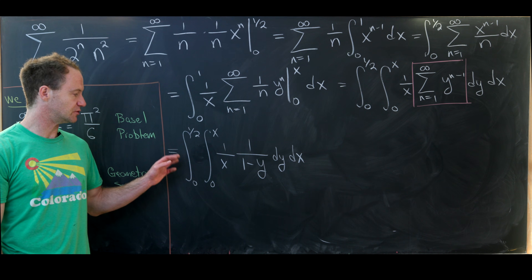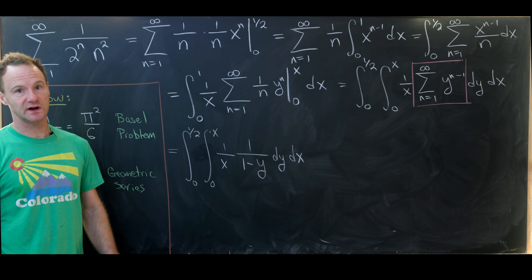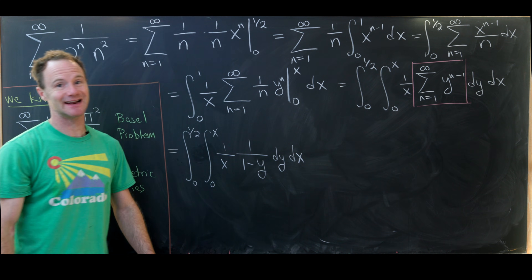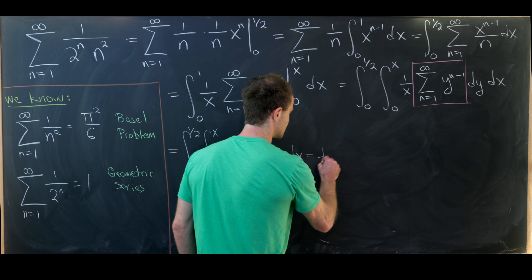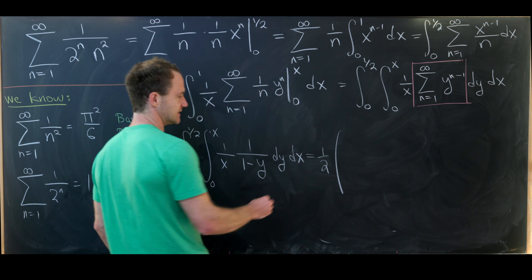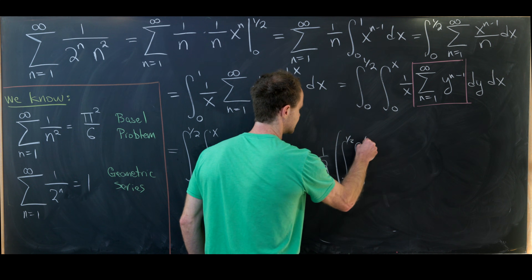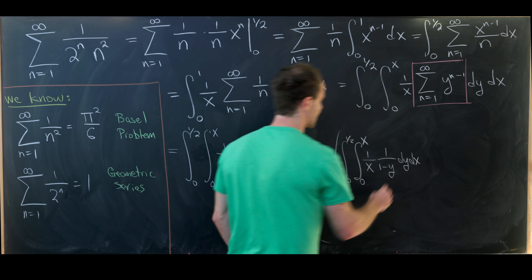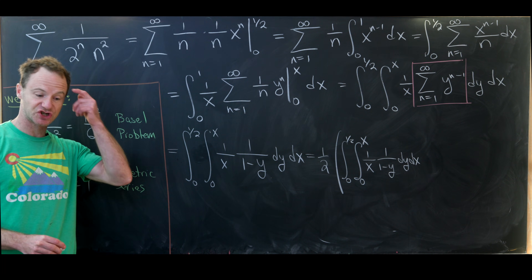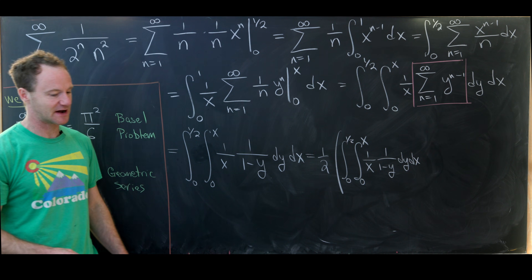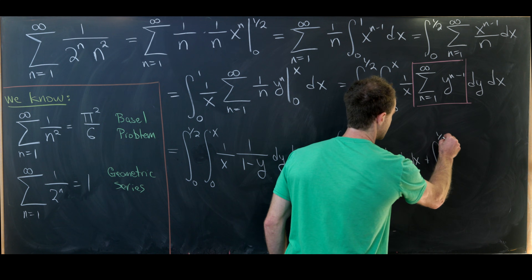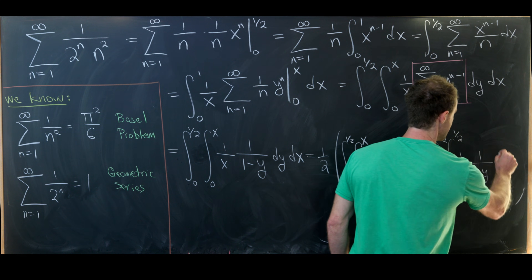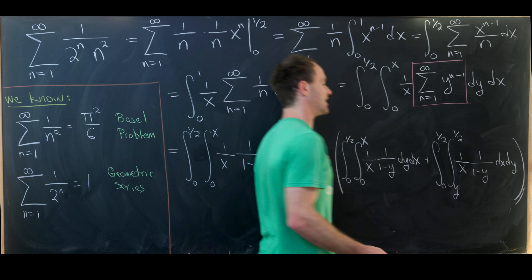Now I'm going to do one of my favorite tricks: multiply by 1 in the form of 1 half times 2 — in other words, take 1 half times this integral added to itself. So this equals 1 half times the integral from 0 to 1 half, the integral from 0 to x, of 1 over x times 1 over 1 minus y, dy dx. For the second copy of this integral I'll change the order of integration, which is allowed by Fubini's theorem, giving the integral from 0 to 1 half, the integral from y to 1 half, of 1 over x times 1 over 1 minus y, dx dy.